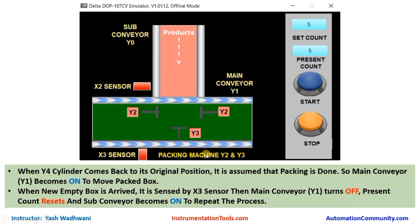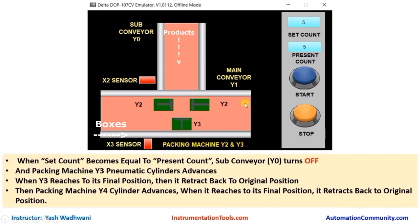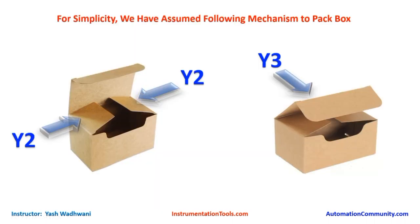When packing is completed, the main conveyor will start and move the packed box forward. Whenever a new empty box arrives at the position, it will be sensed by the X3 sensor, which will stop the main conveyor and reset the counter, and then the process will start again from the sub conveyor stage.